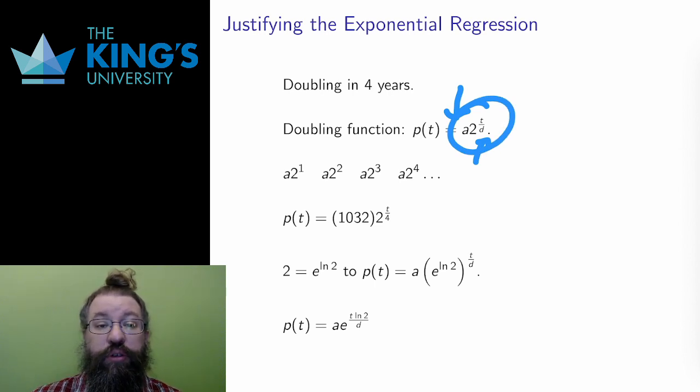After d years, the exponent is 1, so the result is 2a. It's doubled. After another d years, the exponent is 2, and the result is 2 squared a. After another d years, the exponent is 3, so the result is 2 cubed a. And what is happening here is this function is exactly measuring doubling, multiplying by 2 every d years.